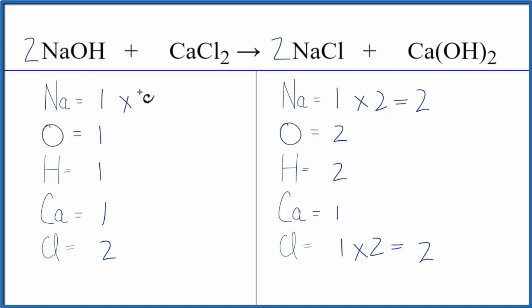One times two, that gives us two. One oxygen times two, that gives us two, and one hydrogen times two, that gives us two. And now the coefficients on each side, they're the same, so this equation is balanced.